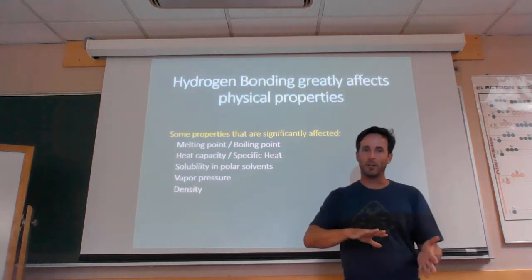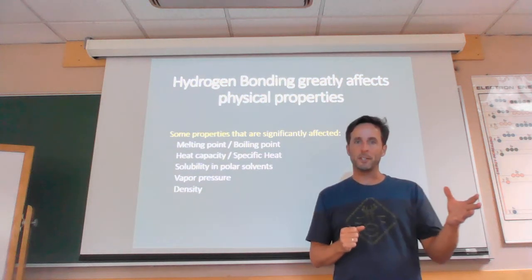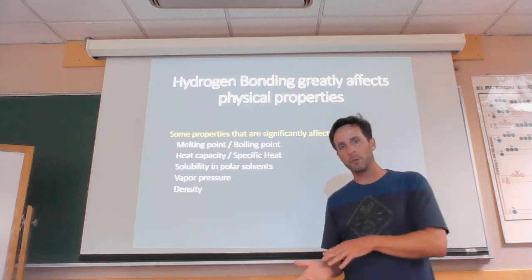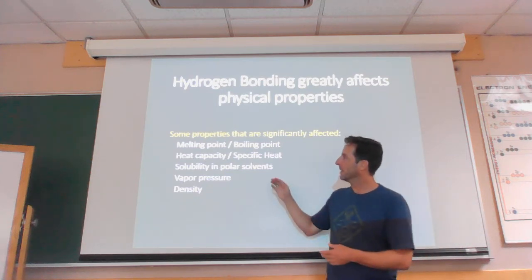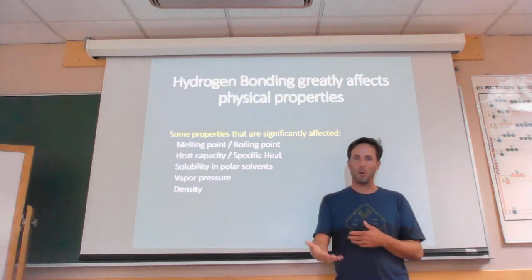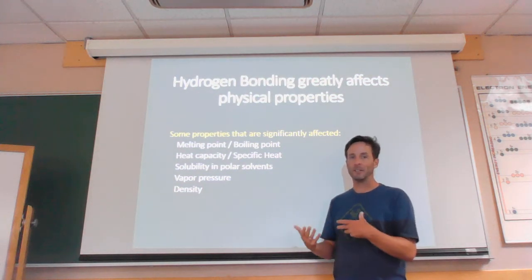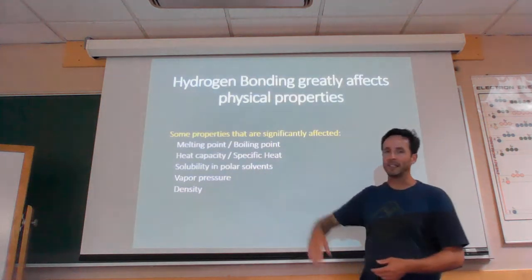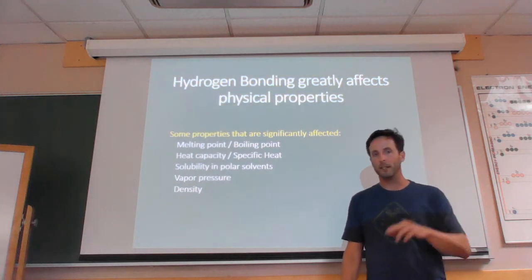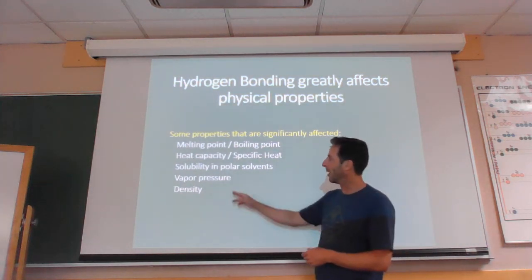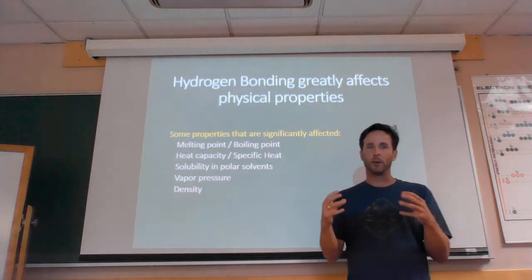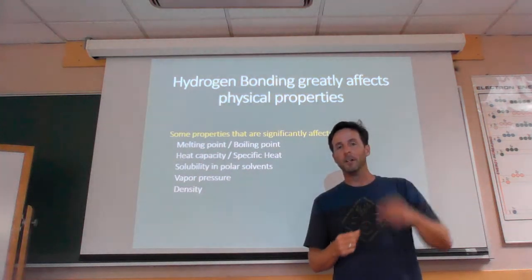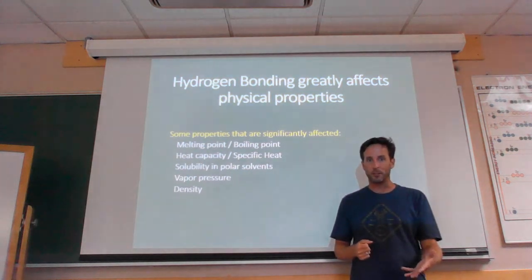Solubility is another property. We know that polar compounds tend to be soluble in polar solvents, and non-polar compounds tend to be soluble in non-polar solvents. But specifically, molecules that can hydrogen bond, because they're extremely polar, tend to make even stronger relationships with a polar solvent. So hydrogen bonding will increase the solubility of a compound in a polar solvent. It also affects vapor pressure — if the molecules of a liquid are strongly interacting, fewer molecules can escape into the vapor, giving you a lower vapor pressure.